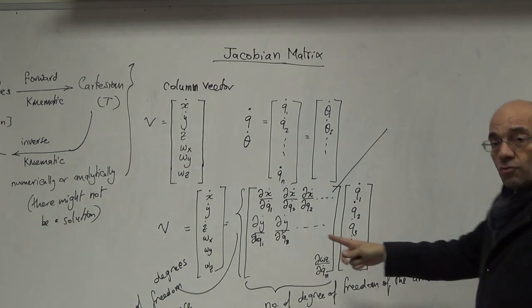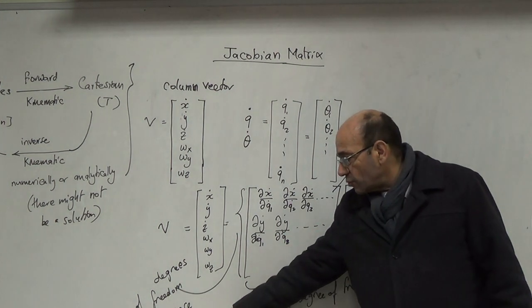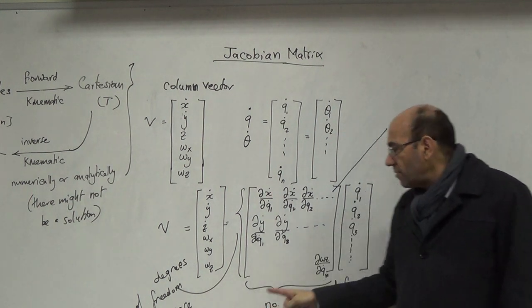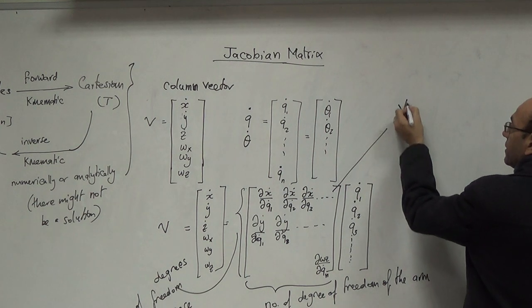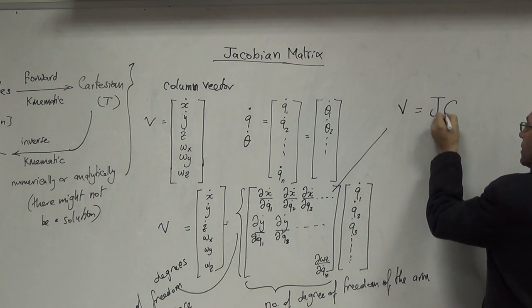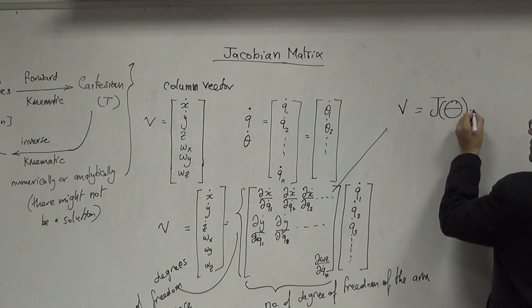Now, this is a kind of a square matrix. Keep that in mind - square matrix for a 6 degrees of freedom manipulator. So the V is J(theta) times Q dot.